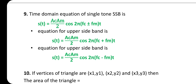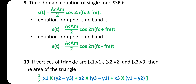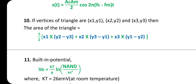Correction: the equation with the minus sign is for the lower sideband. Equation for lower sideband: s(t) = (A_c × A_m / 2) × cos(2π(f_c − f_m)t). The second line refers to lower sideband, not upper sideband.